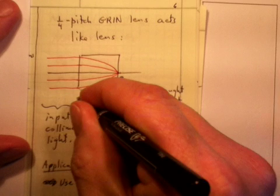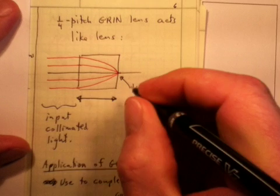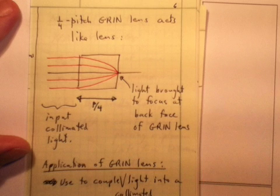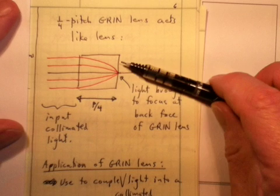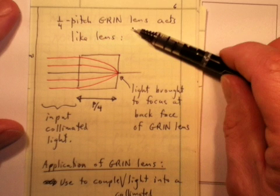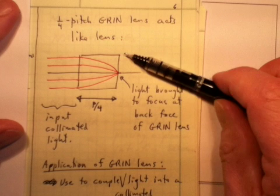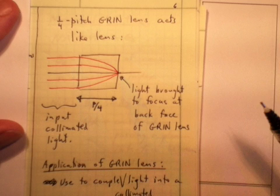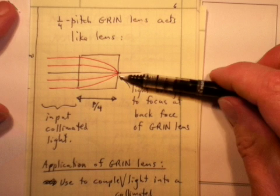So here's now a GRIN lens with a length P over 4 and it acts sort of like a positive lens. It's called a quarter pitch GRIN lens and it acts like a lens. Parallel rays are brought to a focus on the back face of that GRIN lens.